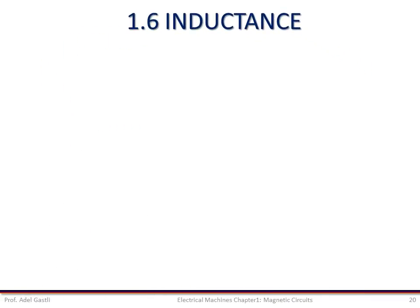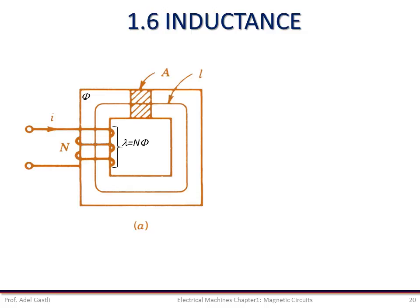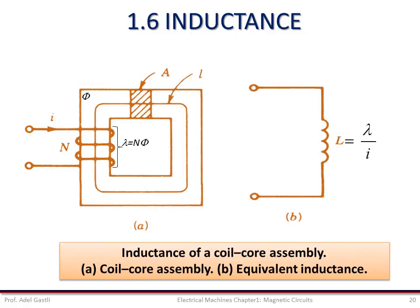Now let us move forward and study another important parameter in the magnetic circuit which is the inductance. A coil wound on a magnetic core, such as the one shown here, is frequently used in electric circuits. This coil may be represented by an ideal electric circuit element, called inductance, which is defined as the flux linkage of the coil per ampere of its current. We will elaborate more on this in the next slide.